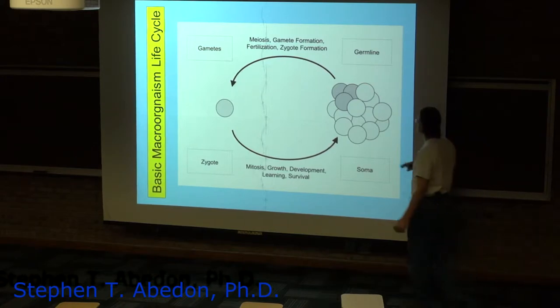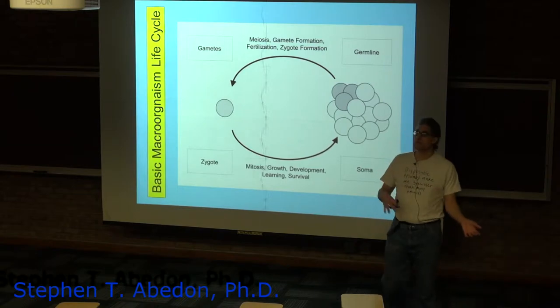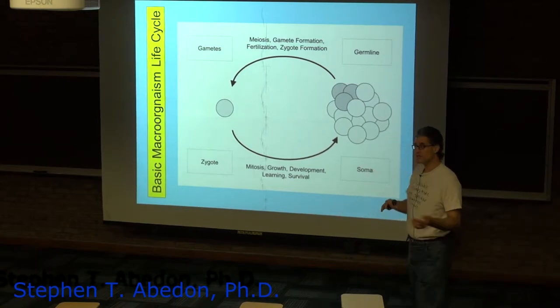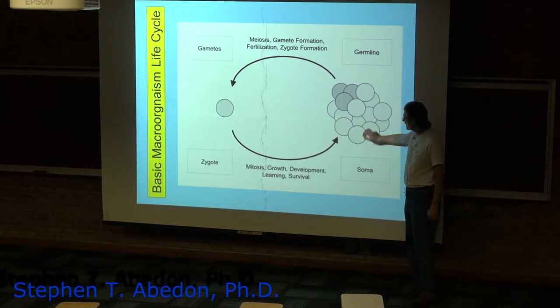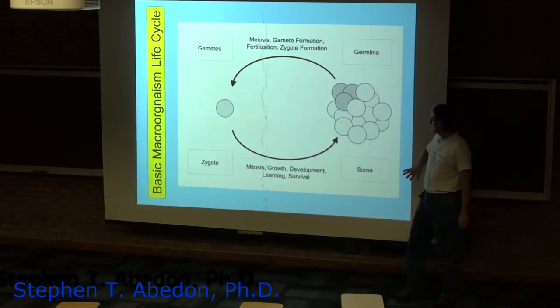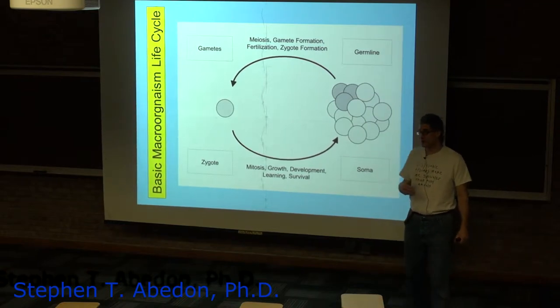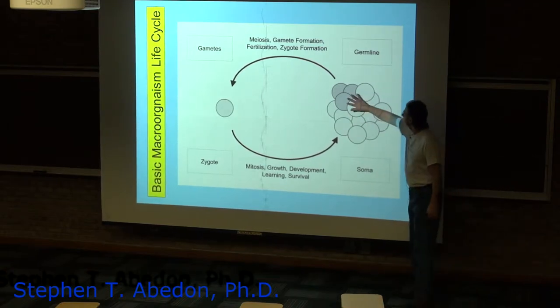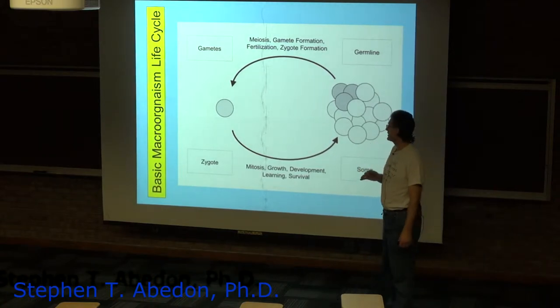And these multicellular organisms, as they transition from being colonial to being a true multicellular organism, you get this cellular differentiation. And at its minimum, cellular differentiation represents a differentiation between the soma, which is responsible for basically survival of the organism, and the germline, which is responsible for producing the next generation.